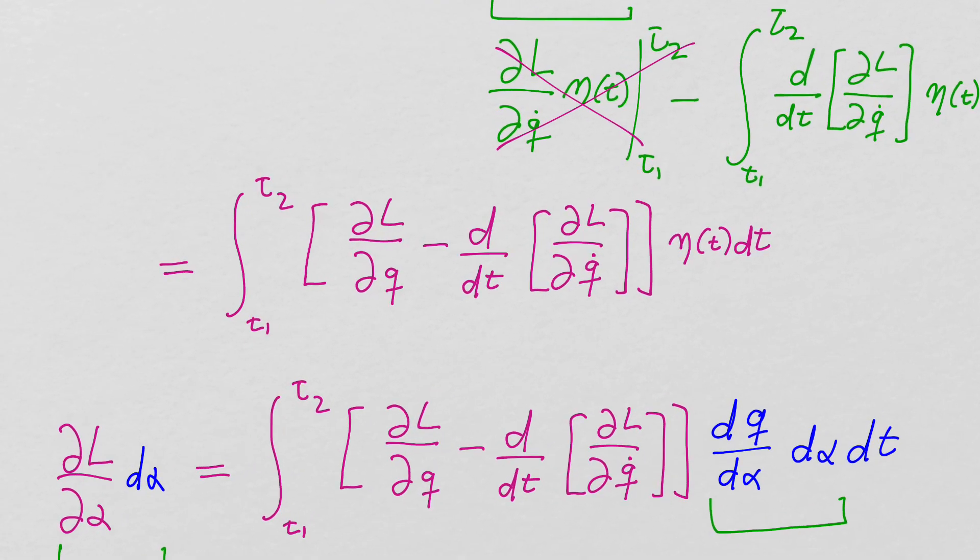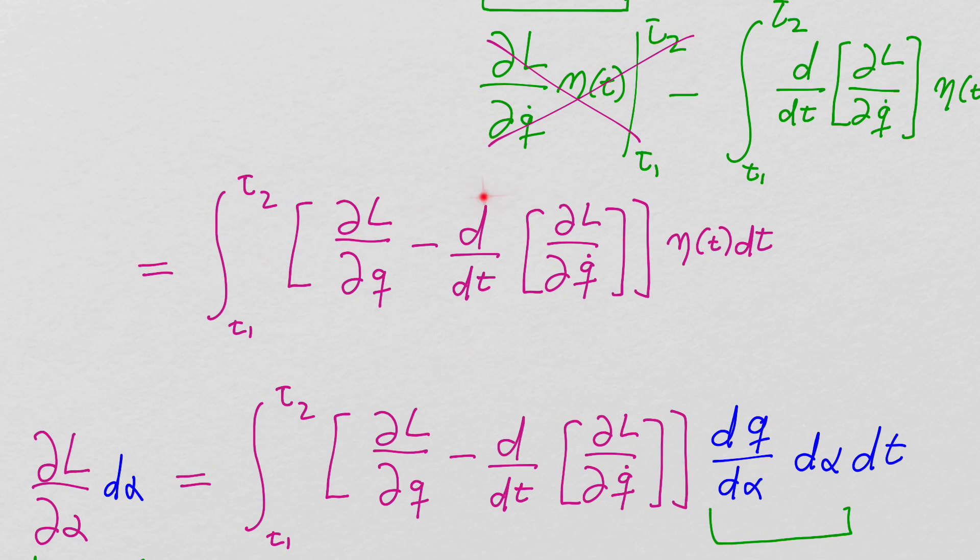But alpha is going to be what's driving the size of everything. So we end up with this, now this is the same Euler-Lagrange equation, we just done very formally and we never use the little delta symbol.